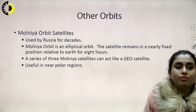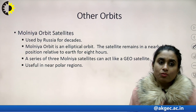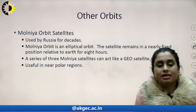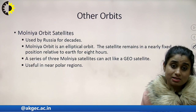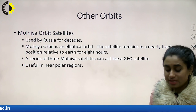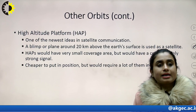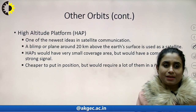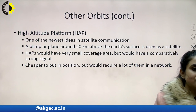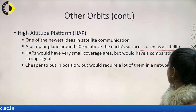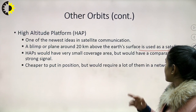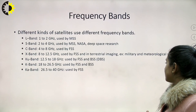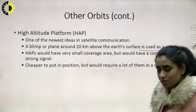There are other orbits as well, like Molnia orbit satellites, which have been used by Russia for decades. Molnia orbit is basically an elliptical orbit where the satellite remains in a nearly fixed position relative to Earth for 8 hours. A series of Molnia satellites can act as a GEO satellite and are useful in near-polar regions. There are also High Altitude Platforms — HAPs — which are the newest ideas in satellite communication. A blimp or plane around 20 kilometres above the Earth's surface is used as a satellite. HAPs would have a smaller coverage area but a comparatively strong signal. They are cheaper to put in position but require many of them in a network — a single one won't fulfill the purpose.